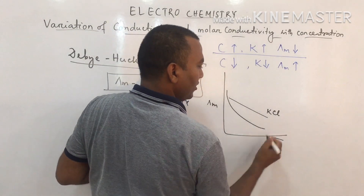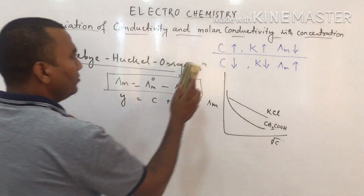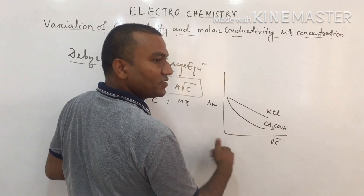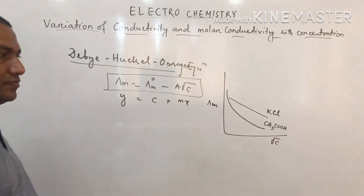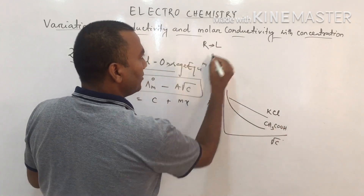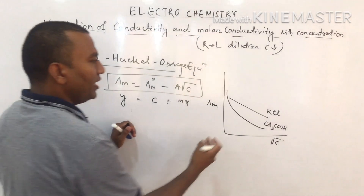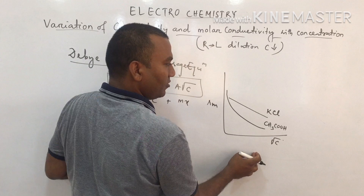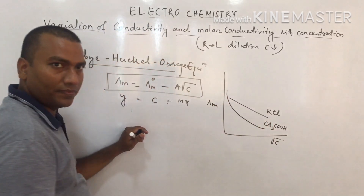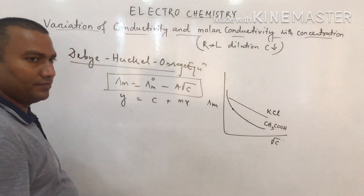Explaining the graph from left to right (concentration increases) and right to left (dilution increases): for strong electrolytes, λm increases only slowly with dilution. For weak electrolytes, λm increases but then rises very sharply at one point when concentration decreases significantly.